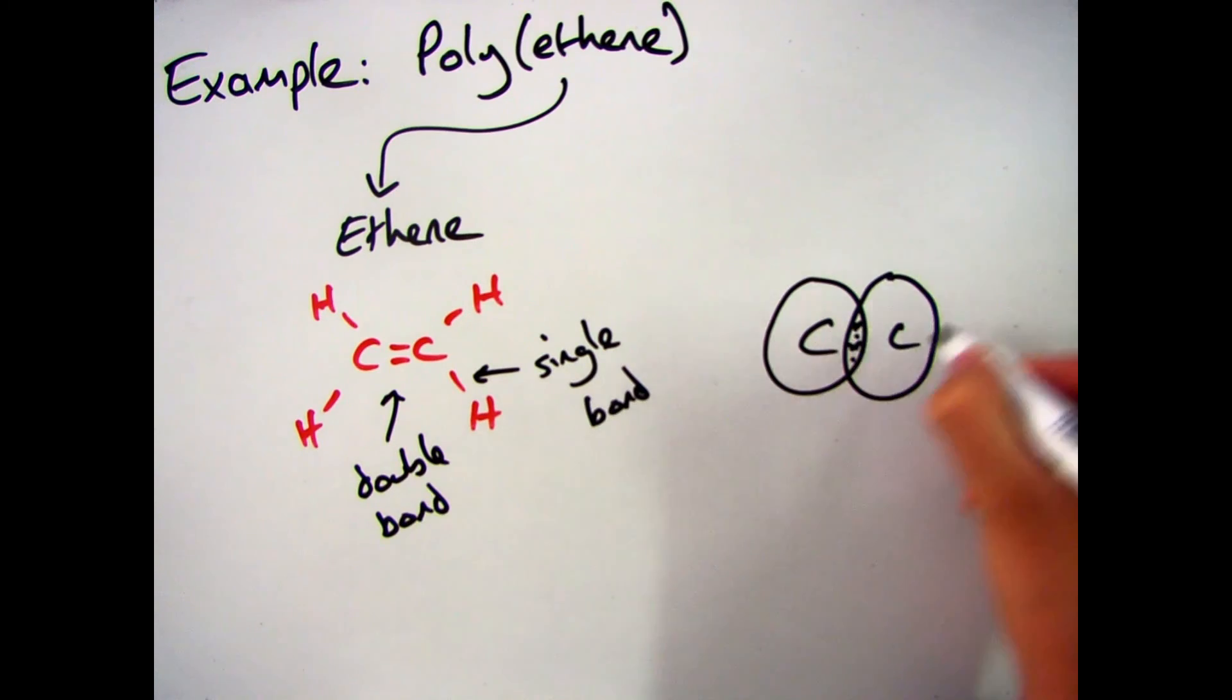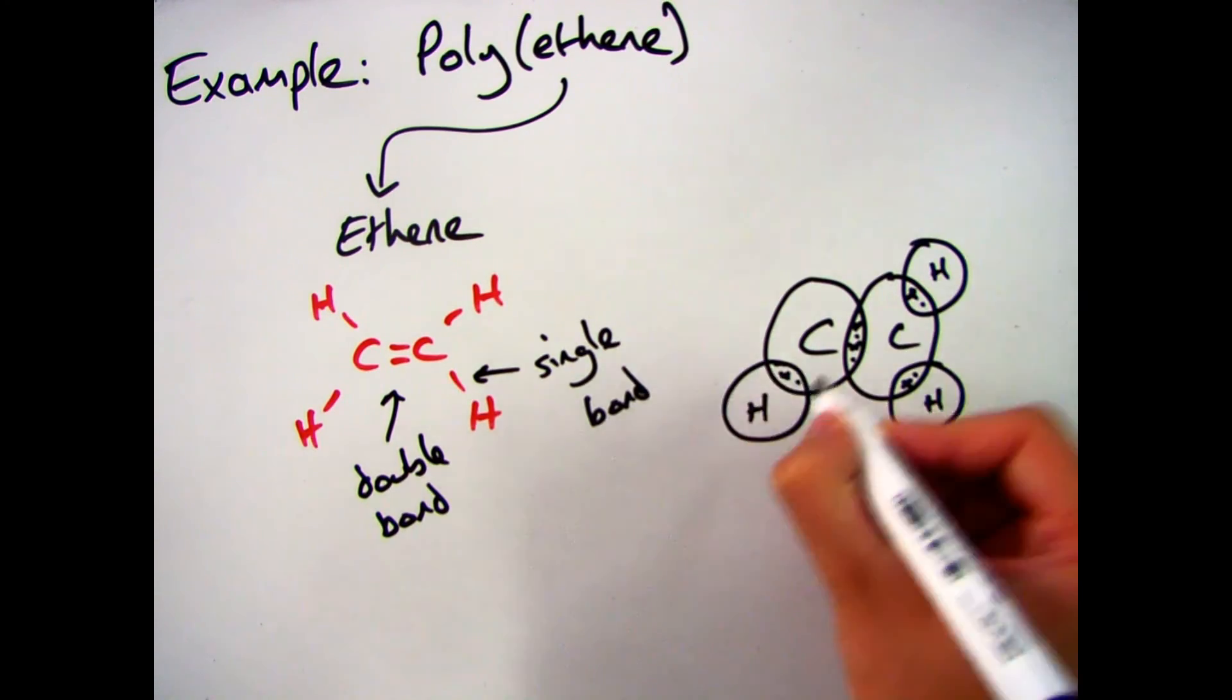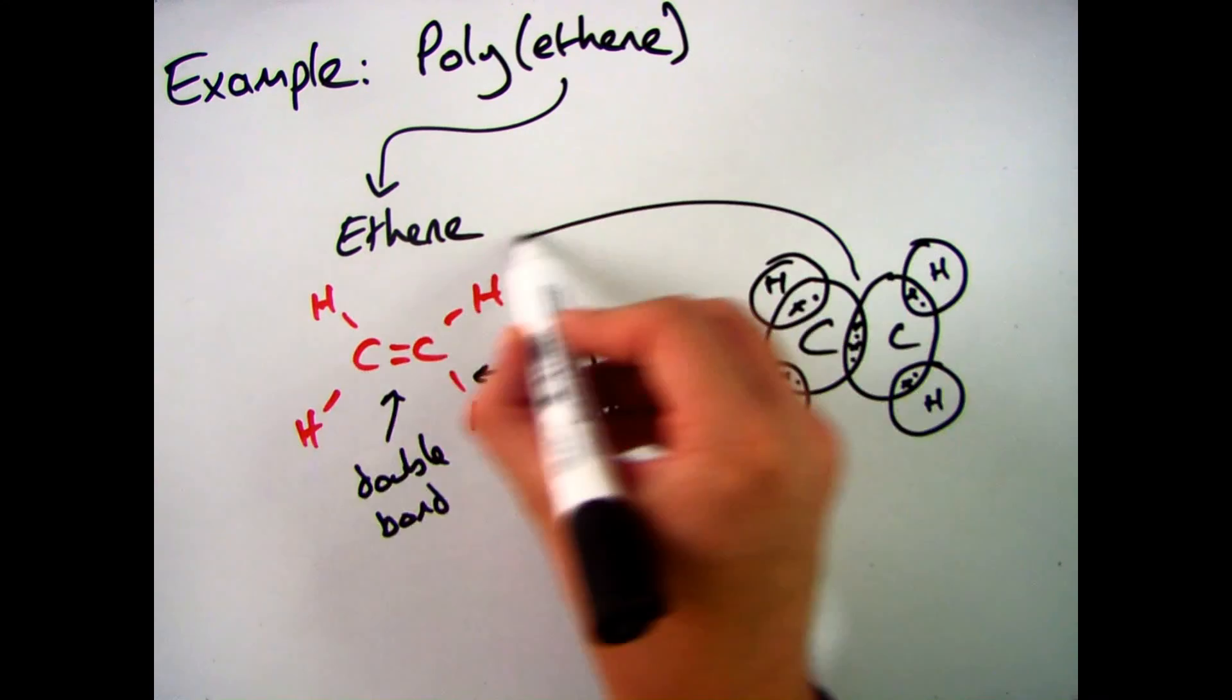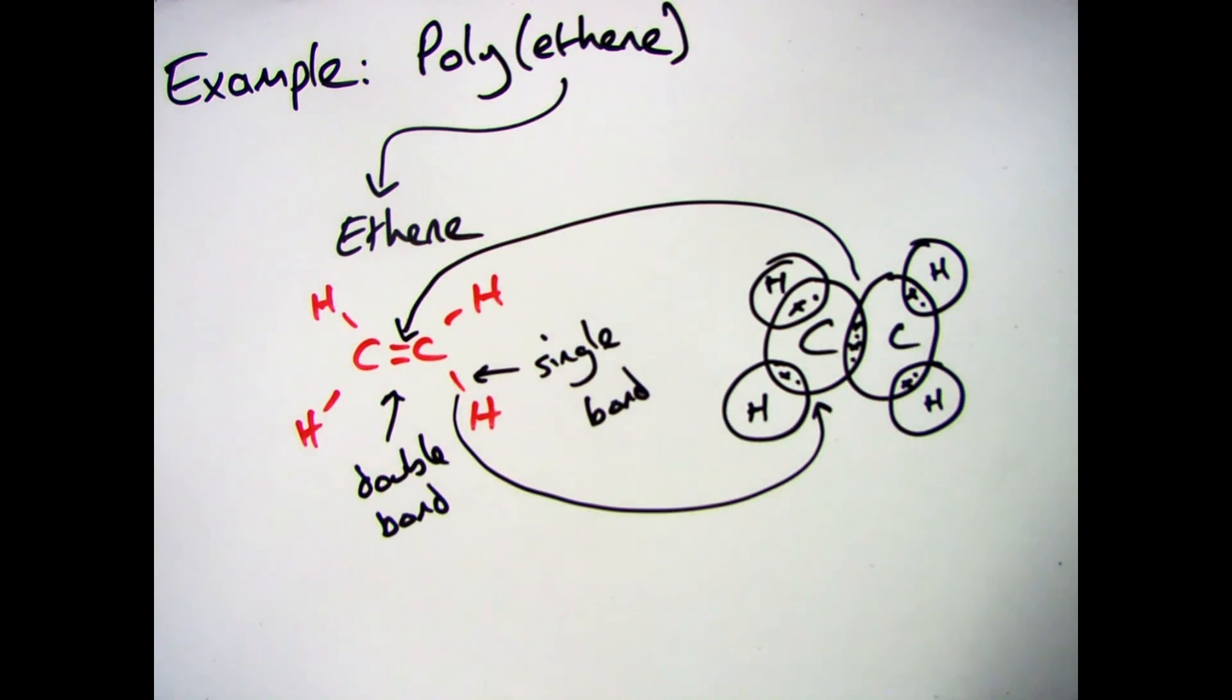If I were to draw the dot and cross diagram it would look like this here. With the two pairs of shared electrons being the double bond and the one pair of shared electrons being single bond.